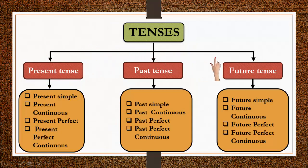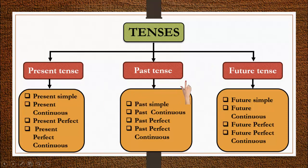Generally, tenses are divided into three types: present tense, past tense, and future tense. Within each tense, there are four sub-tenses, making twelve tenses overall.